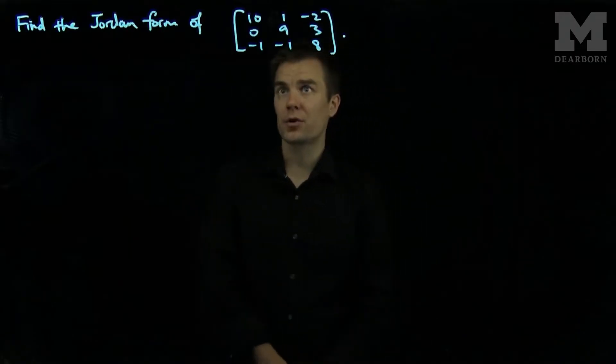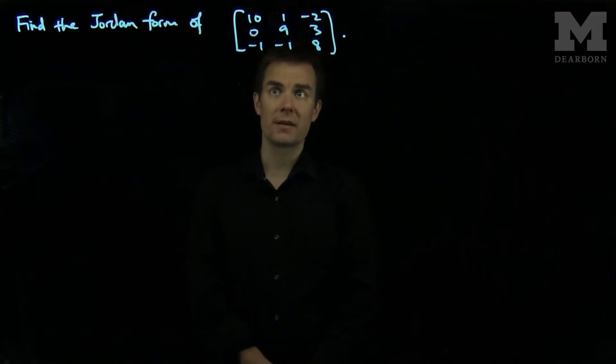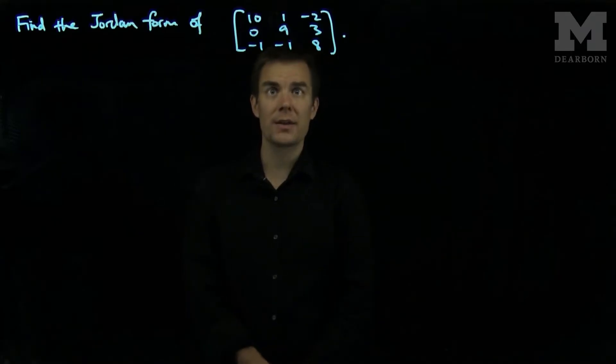Suppose we wish to find the Jordan form of the matrix: 10, 1, negative 2, 0, 9, 3, negative 1, negative 1, 8.